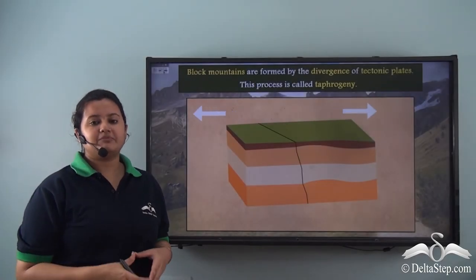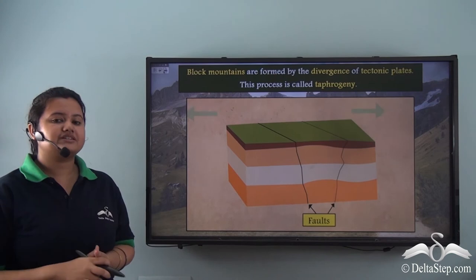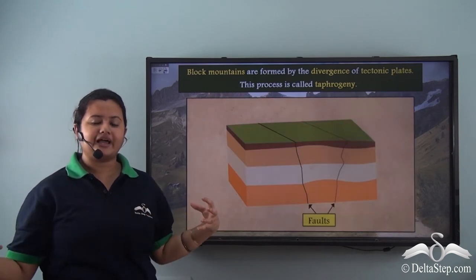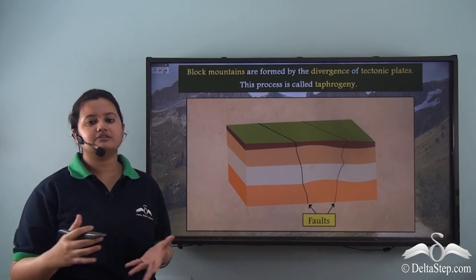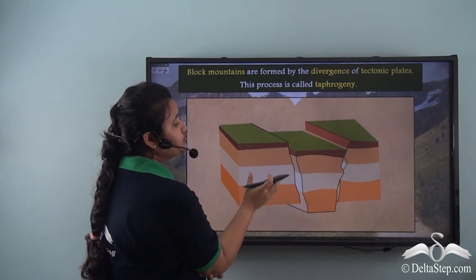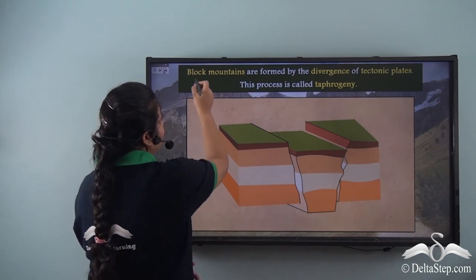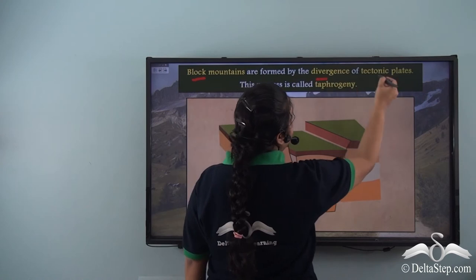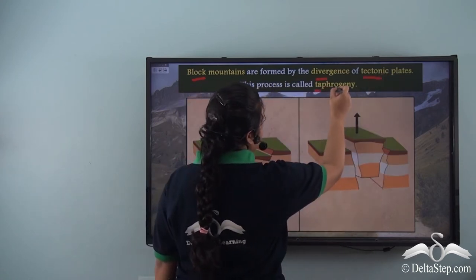When two tectonic plates diverge, they stretch the land between them, causing cracks or faults on the earth's surface. The land between these two fault lines gets submerged, leading to the formation of block mountains. Block mountains are formed by the divergence of two tectonic plates, and this process is known as taphrogeny.